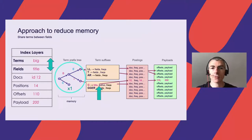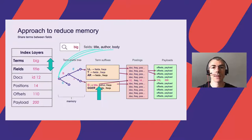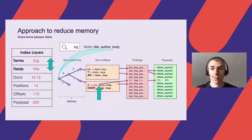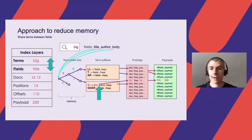This approach has two advantages. First, we share all field terms in a single compact prefix tree. Second, our use case is to search the same query across all 150 fields — a Lucene disjunction max query. For example, searching the term 'big' in three fields: title, author, and body. It now becomes possible to seek only once in the prefix tree, cache the term data for all fields, and serve it for all other fields — doing only one index lookup.